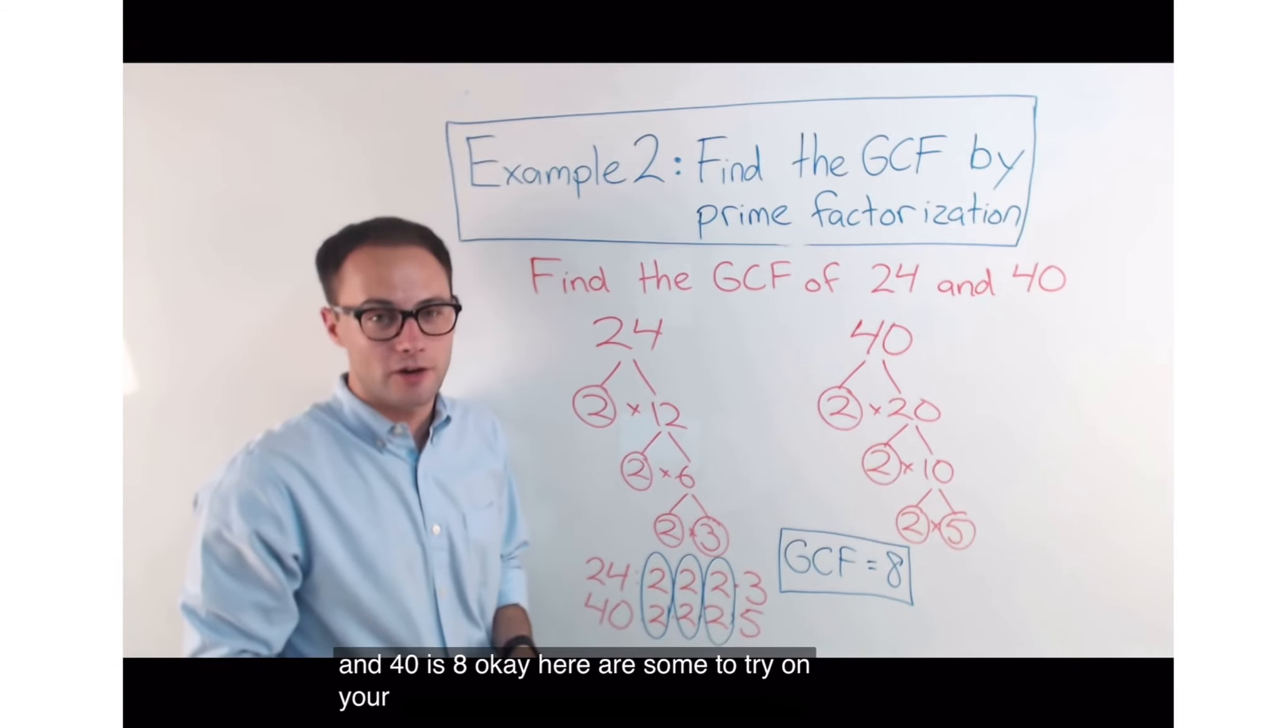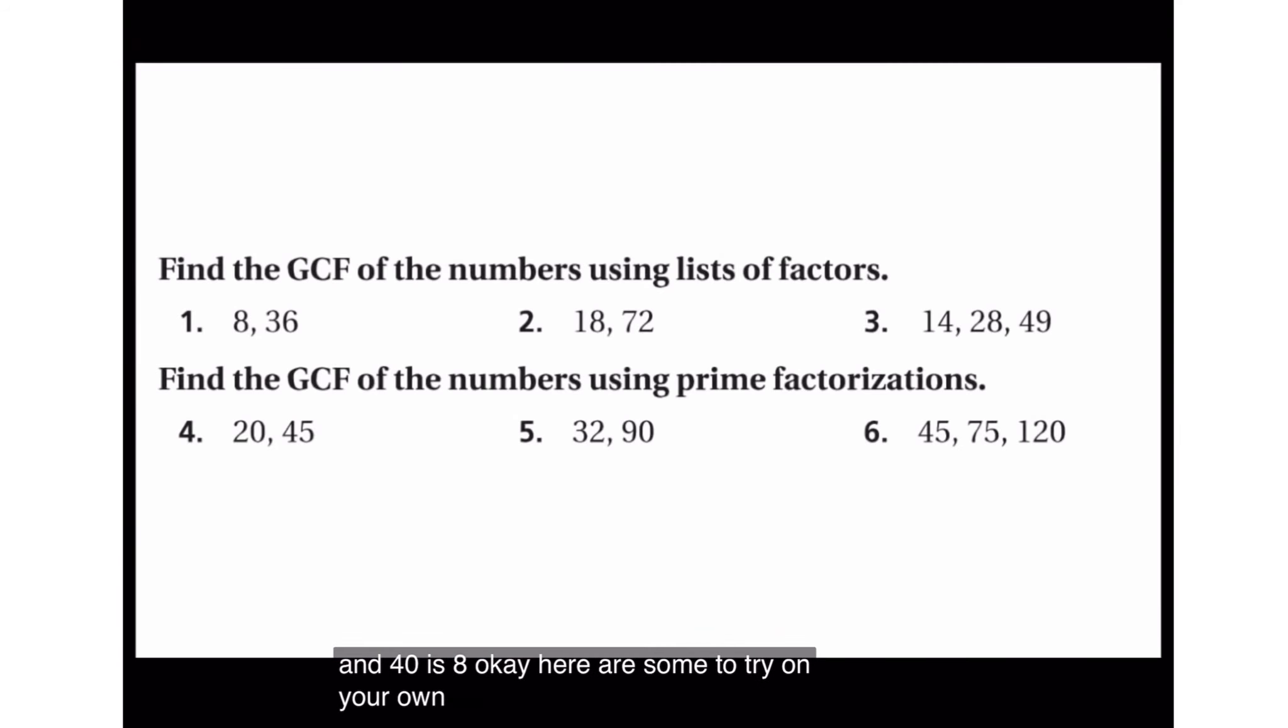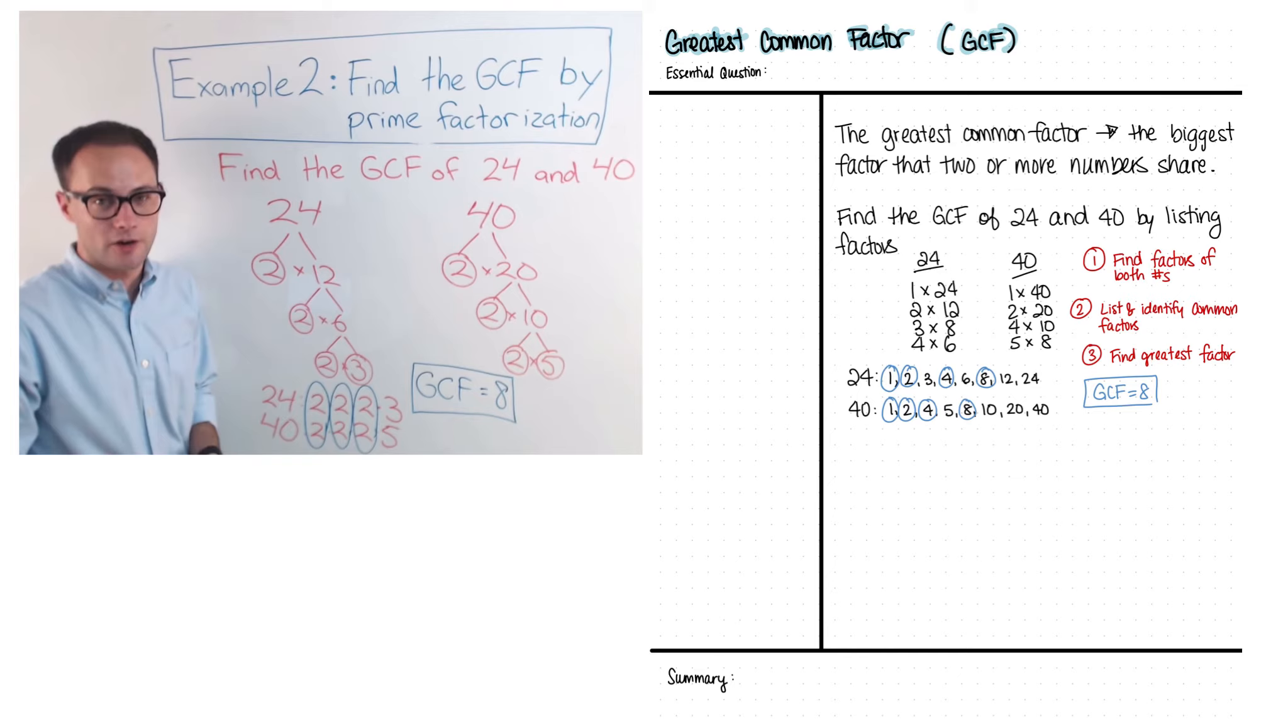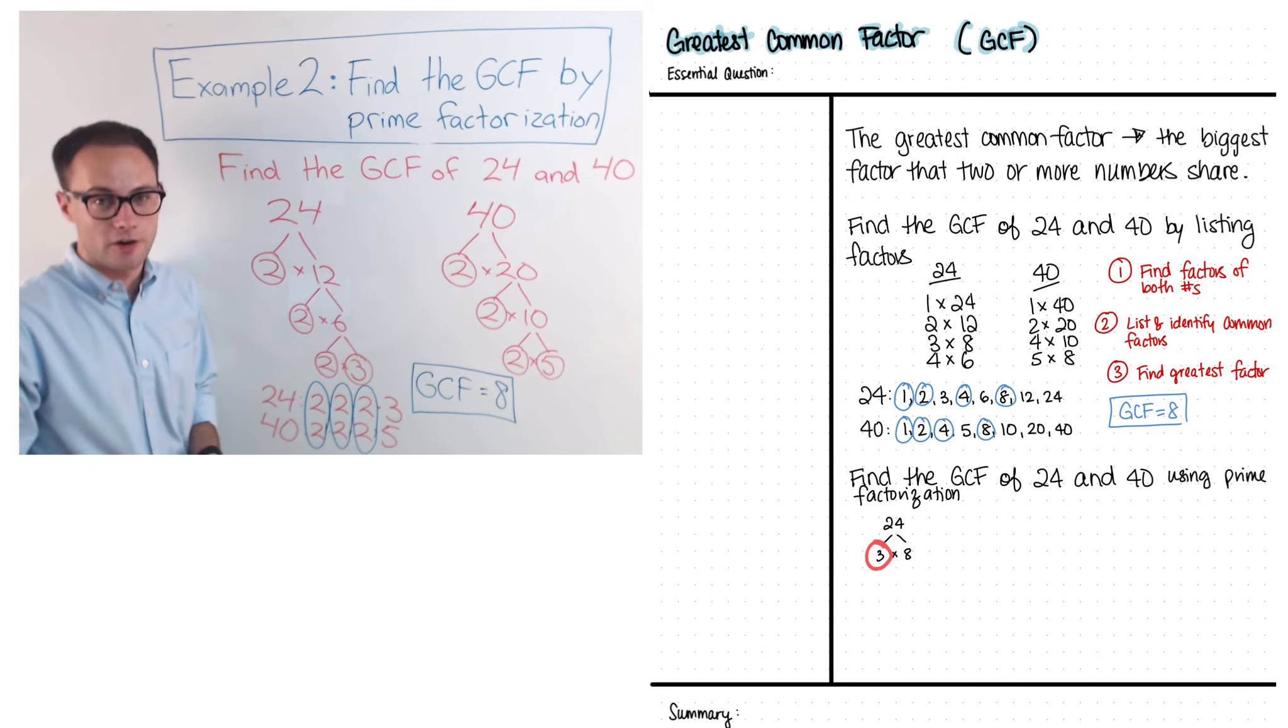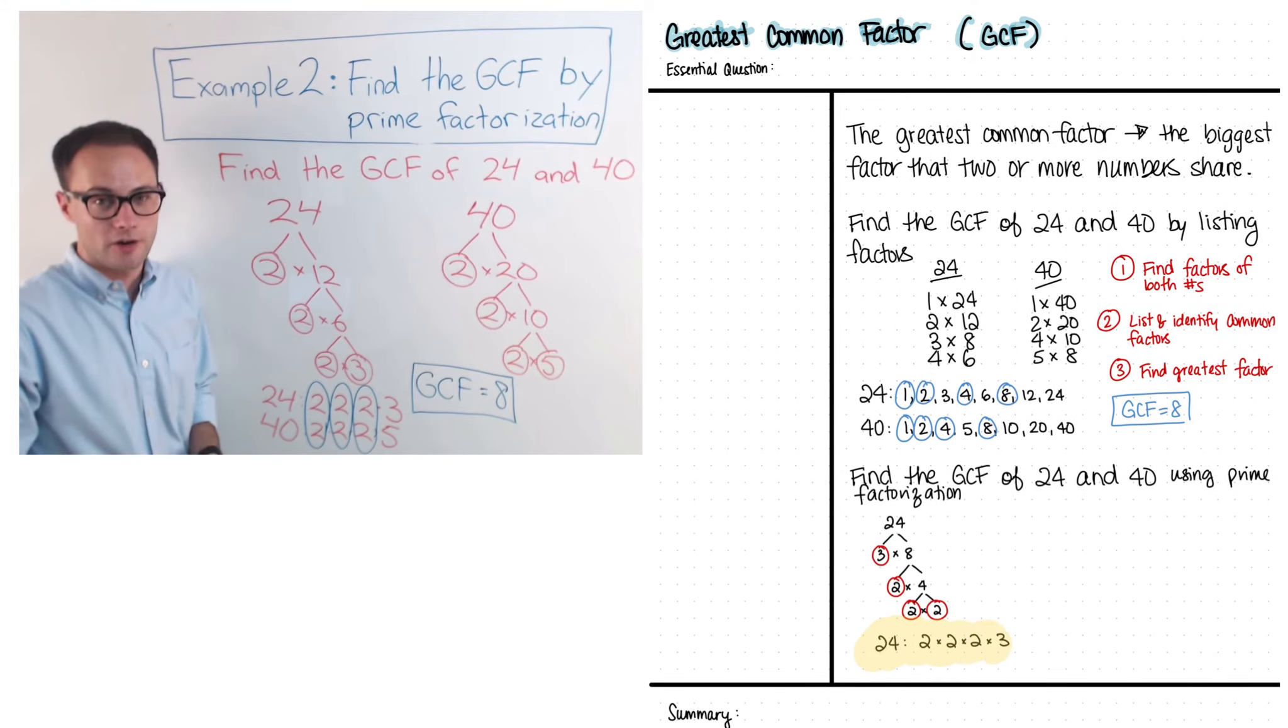Okay. Here are some to try on your own. Notice in the video, he mentioned we can find the prime factorization in many ways. So, in his example, when he did 24 and broke it down to 2 and 12, we could have broken it down using two other numbers that multiply to 24. For example, 3 and 8. So, let's try that in our notes. 3 is a prime number, so we can circle that. Then, 8 is 2 times 4. And, 2 is a prime number. And, 4 is 2 times 2. And, both of these are prime. So, notice that we get the same prime factors at the end. 2, 2, 2, and 3.